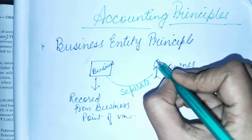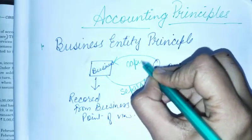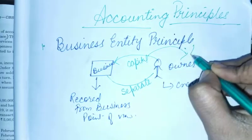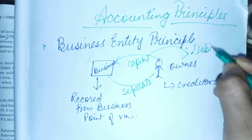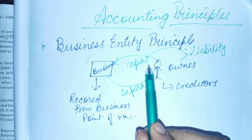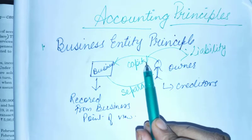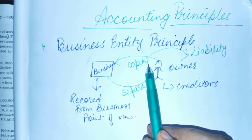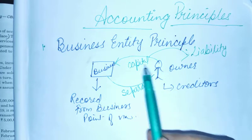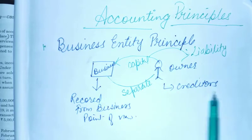जो businessman है वो capital लेकर आता है जैसे ही वो business start करता है. तो ये capital को liability माना जाता है. Business मानता है कि मैंने owner से जो capital है वो उधार लिया हुआ है, और मुझे future में चुकाना है — so this is my liability. और ये जो owner है, वो मेरा creditor है.